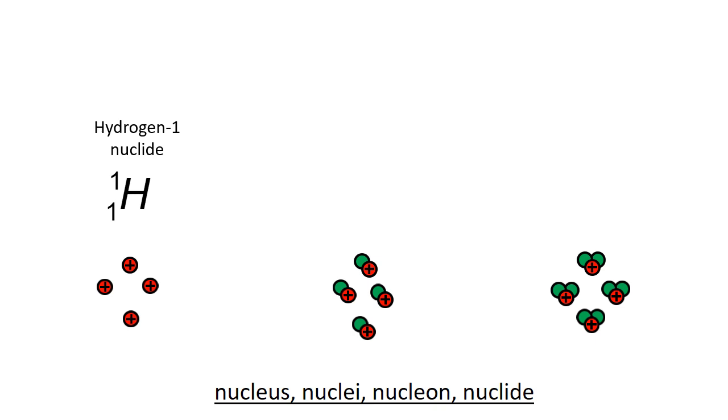So for instance, here we have the nuclide of hydrogen-1, mass number one, charge number one. If we add a neutron, we get the nuclide of hydrogen-2, mass number two and charge number one.